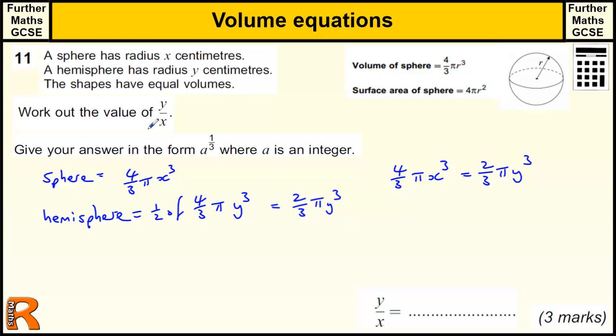And we want to have y divided by x. So what we need to do is, well the first thing we can do is get rid of a few things. So let's get rid of this pi. If I divide both sides by pi, that gets rid of the pi. If I times both sides by 3, that gets rid of the third. If I divide both sides by 2, that gives me that. So we've got 2 x cubed equals 1 lot of y cubed.